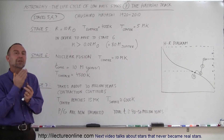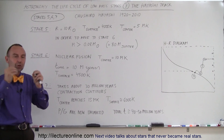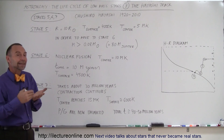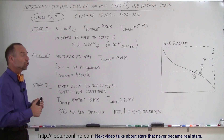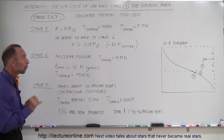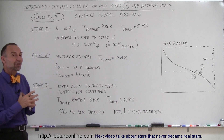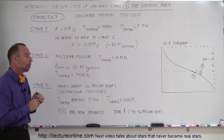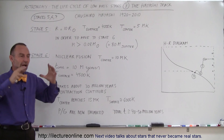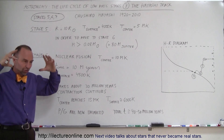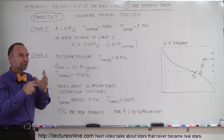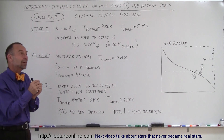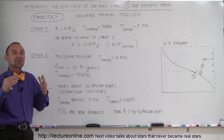At 5 million Kelvin, it's still not hot enough for nuclear fusion to begin. To move to stage 6, the temperature needs to reach 10 million Kelvin. Another very important aspect of star formation is that there must be a minimum amount of mass for that temperature to be reached — enough gravitational force must push the cloud of dust and gas together to a region where the temperature can reach 10 million degrees, and for that to happen there must be enough mass.